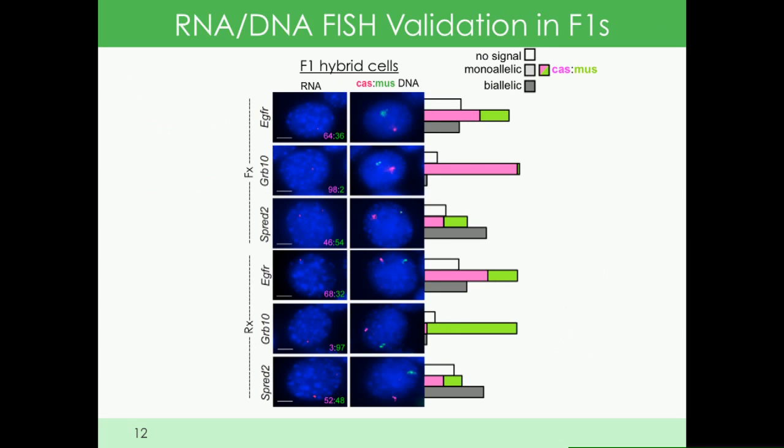David validated these results by qPCR and FISH. We were very lucky to have access to wonderful allele-specific oligopaint probes from Ting Wu's lab. David could do DNA FISH and label the two alleles in different colors, combined with RNA FISH to determine which allele was expressed. Here you see that for an imprinted gene, there's expected strong expression from the maternal allele.